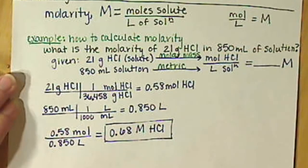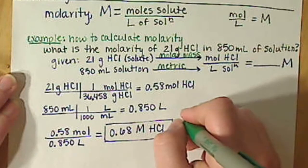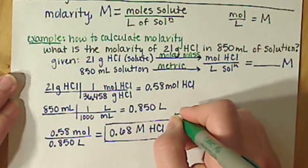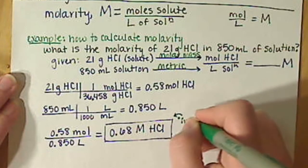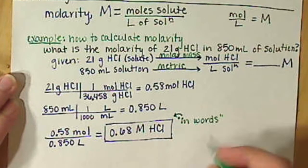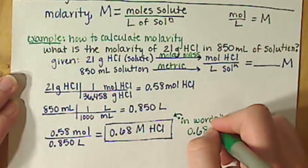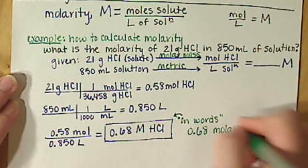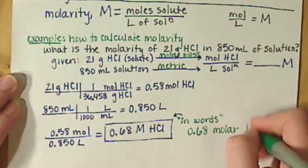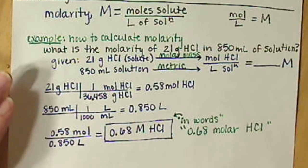That is our final answer. If we want to read this in words, this would be 0.68 molar HCl — that's how we refer to that compound.